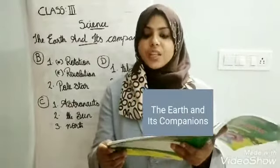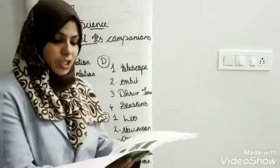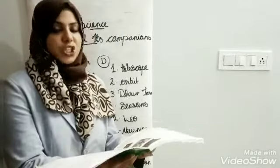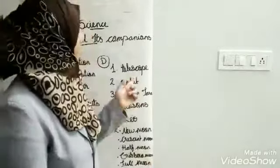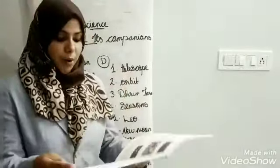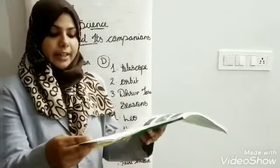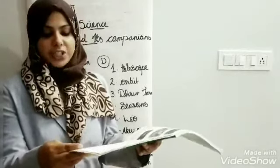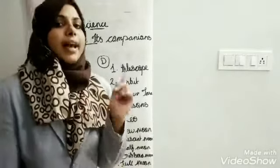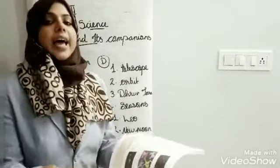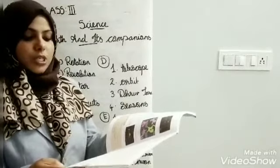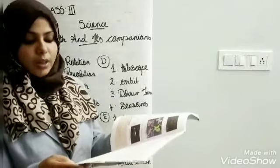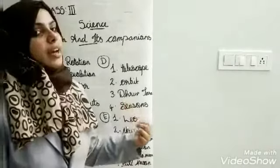Section D: fill in the blanks with the help of the given words. First question: we can observe stars with a — telescope or microscope. We know we observe stars with the help of a telescope, so the right answer is telescope. Second question: the path followed by the Earth around the sun is called — axis or orbit. The right answer is orbit. Third question: pole star is also called — Dhrutara or Dharmatara. The right answer is Dhrutara.